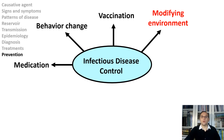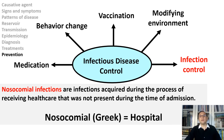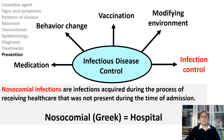Modifying the environment is another way to control infectious diseases — by improving vector control, sanitation facilities and hygiene, safe water and food supply, and air quality. Nosocomial infection does not show any evidence of being present at the time of admission to a hospital — it is acquired as a result of a hospital stay. Infection control requires sterilization of equipment, medical personnel wearing protective clothing, isolation of infectious patients using isolation rooms and wards, regular cleaning of medical facilities, hand washing, and hospital surveillance systems.